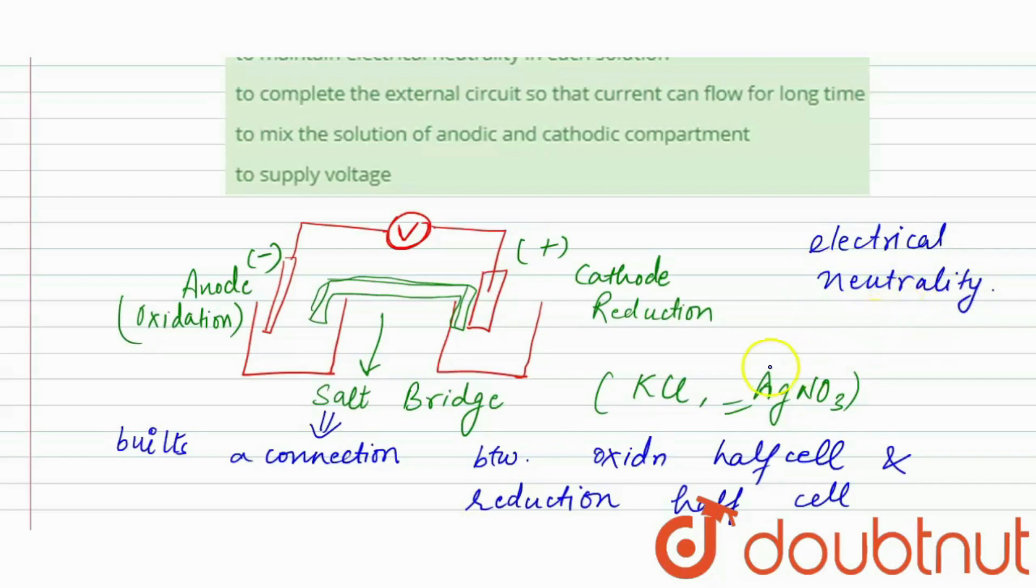Because if we will not use salt bridge there will be equilibrium attained too rapid, like it will be very fast. Okay. But if we use the salt bridge, it will prevent the oxidation and reduction elements to attain the equilibrium rapidly.